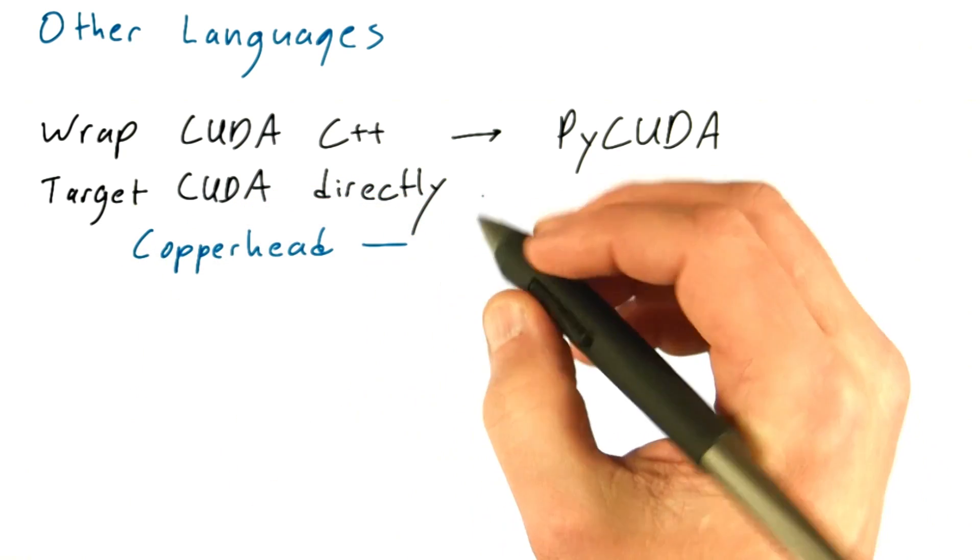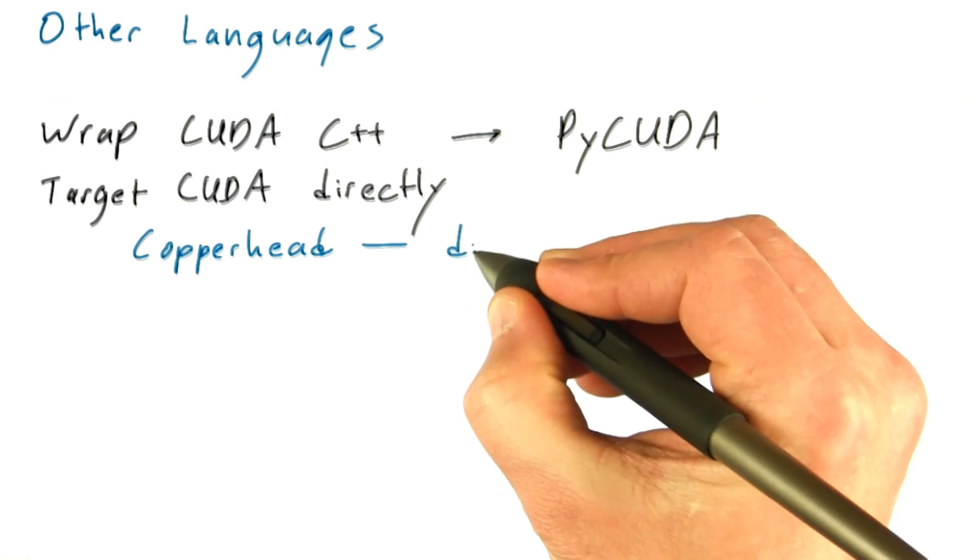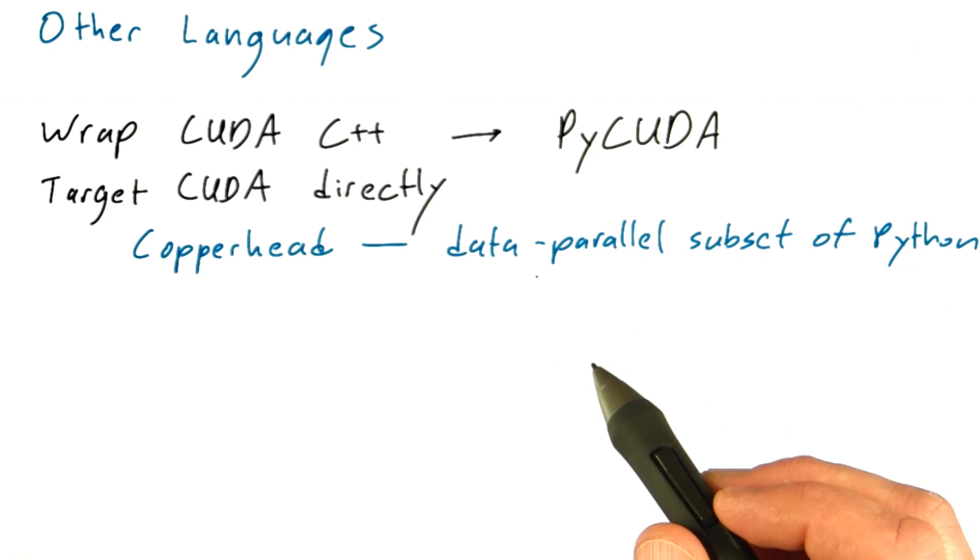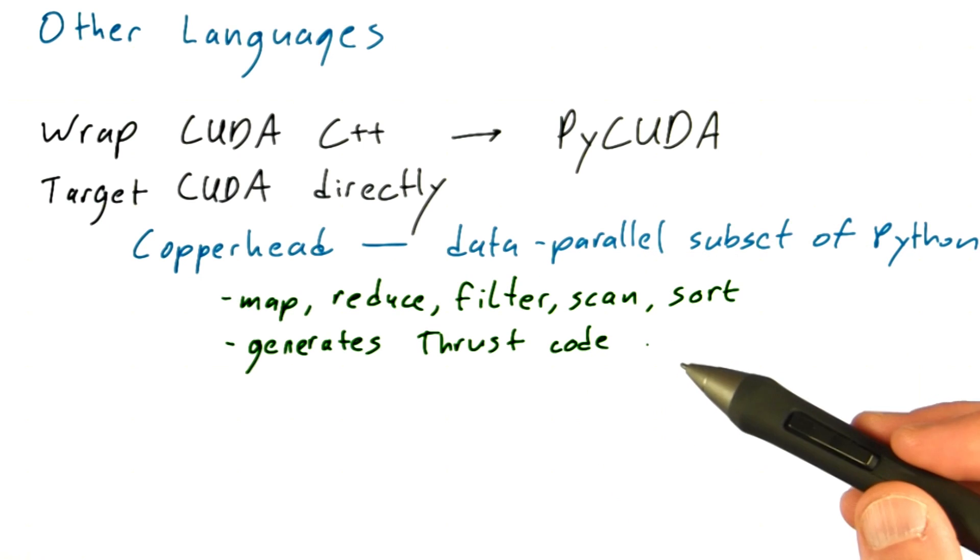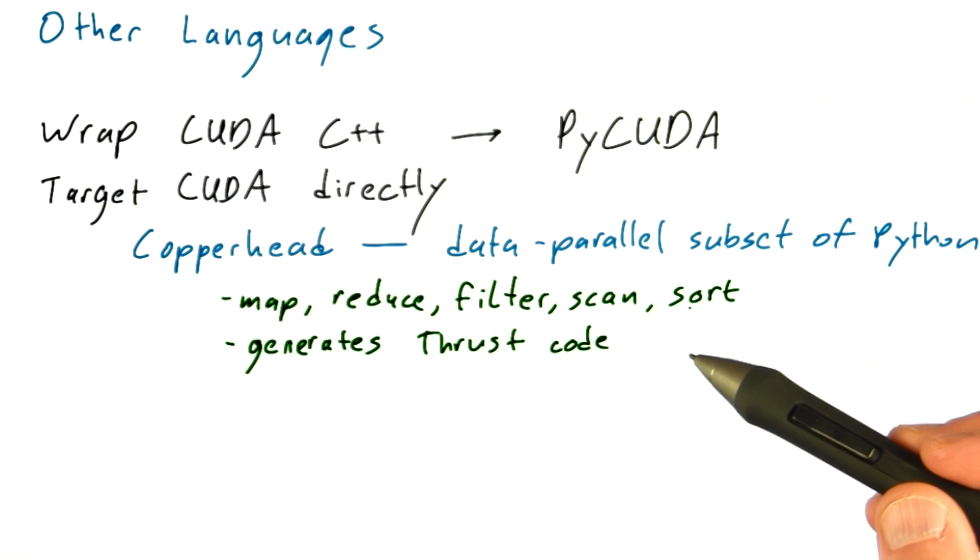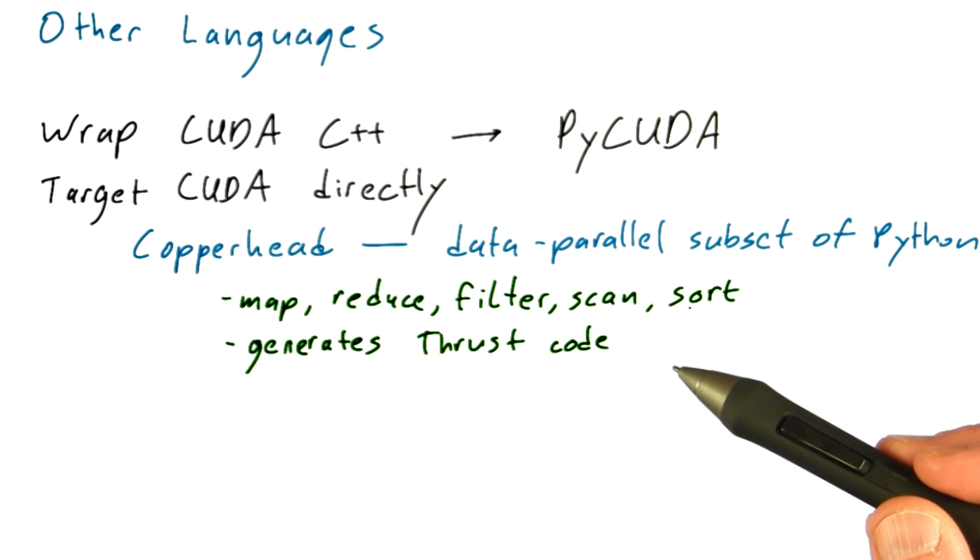Fans of Python will also want to check out Copperhead. Copperhead is a data-parallel subset of Python that uses a library of data-parallel functions such as map, reduce, filter, scan, and sort. When a Copperhead function is called, the runtime generates Thrust code and calls it from the Python interpreter.